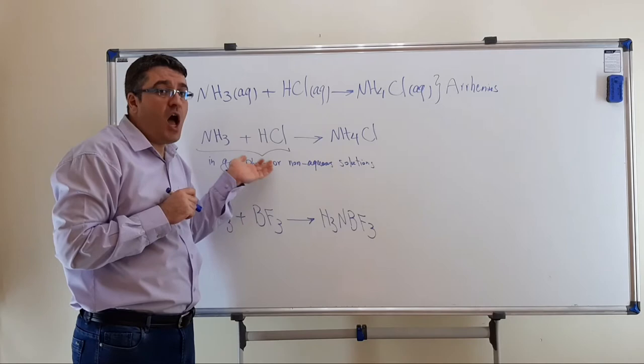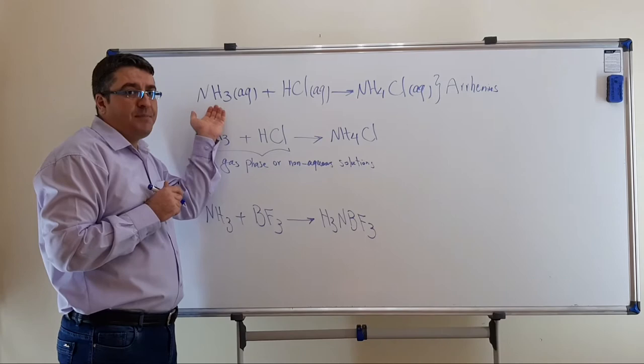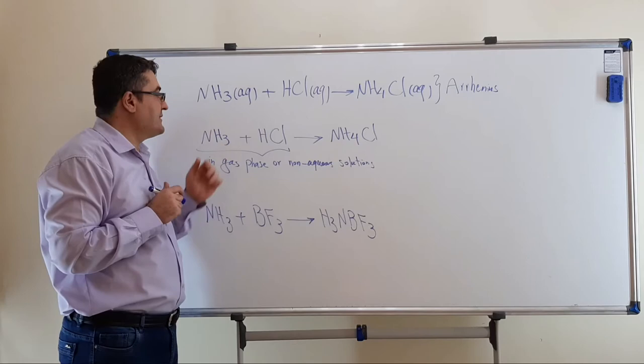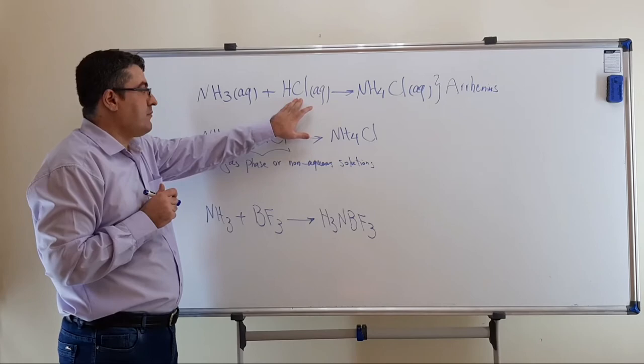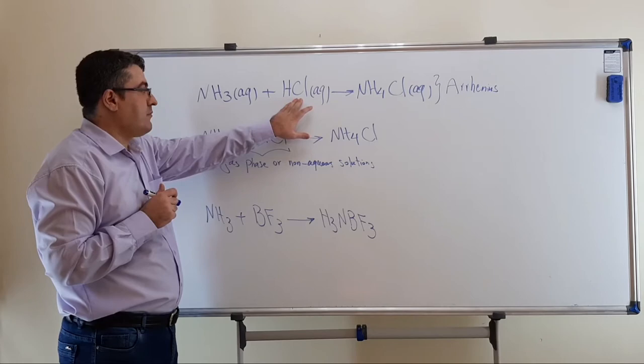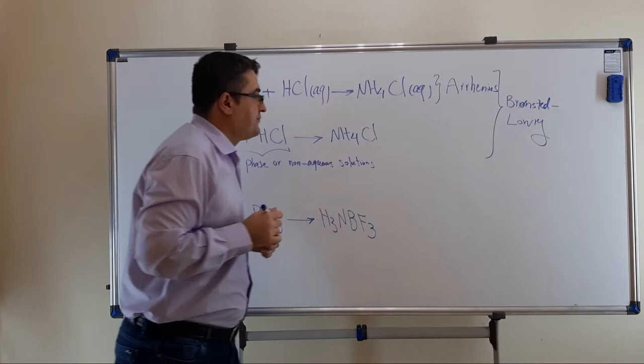On the other hand, both the first and second reactions are acid-base reactions in Brønsted-Lowry acid-base theory. In both of these reactions, ammonia accepts a proton — it is a proton acceptor, so ammonia is a Brønsted base. And HCl provides that proton — it is a proton donor, so it is a Brønsted acid. So both of these reactions are Brønsted-Lowry acid-base reactions.